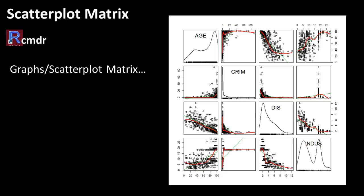The scatter plot matrix also shows pairwise scatter plots for all variable combinations. For example, one cell shows age on the x-axis versus crime on the y-axis, another shows age versus distance. Each pair appears twice — once with each variable on each axis — and the two are just flipped versions of each other.